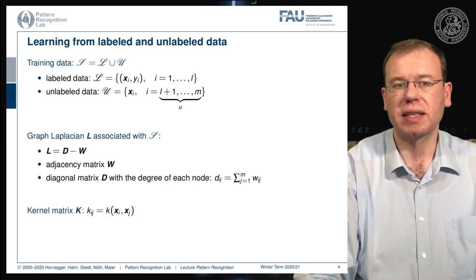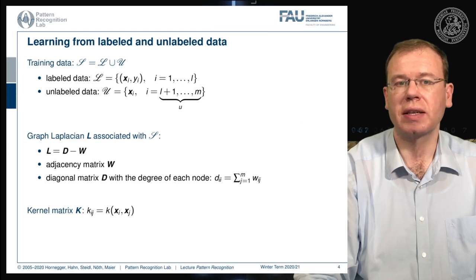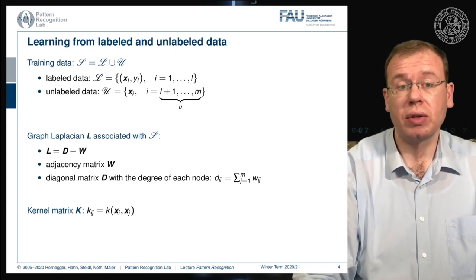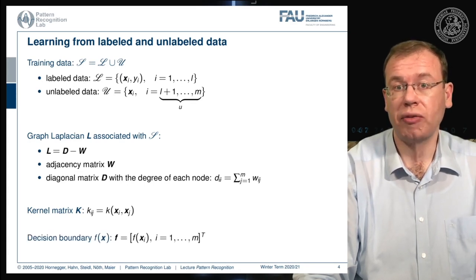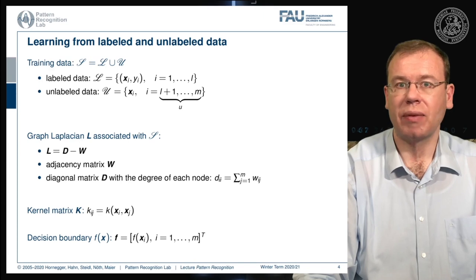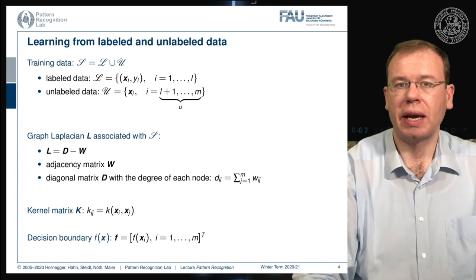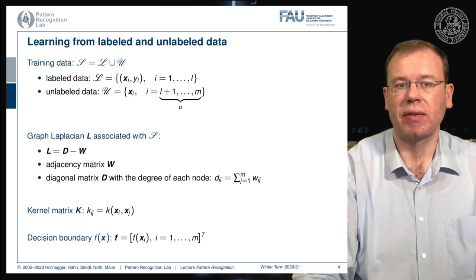We also need a kernel matrix. The kernel function is evaluated on some x_i and x_j. This is all used to find a decision boundary F. We write the decision boundary F as a vector — essentially the evaluation of the decision boundary on all of the training observations, including the unlabeled data. So F is a vector of length M.